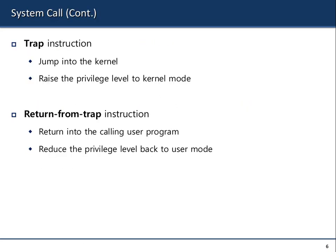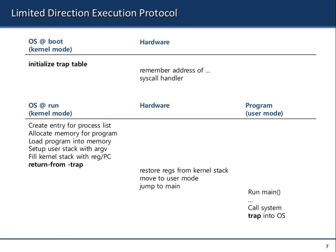That's basically how the CPU operates and how the OS maintains control. This is the timeline for limited direct execution. At boot time, in kernel mode — the bootloader — there is what's called a trap table, also known as an interrupt vector table. It's a lookup table — a key-value structure where the key is the interrupt number and the value is a pointer to a function. After the OS boots and runs the usual setup, there's a return-from-trap.